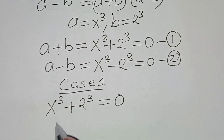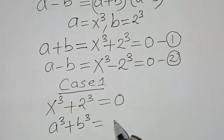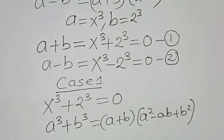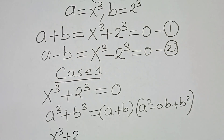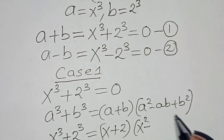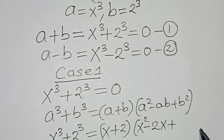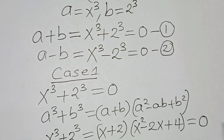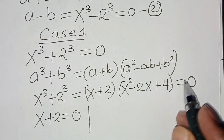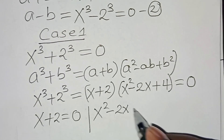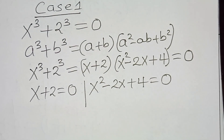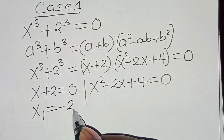This is in the form of a cubed plus b cubed, which we can express as (a plus b)(a squared minus ab plus b squared). So x to the power 3 plus 2 to the power 3 can be expressed as (x plus 2)(x squared minus 2x plus 4) equals 0. We have two parts: x plus 2 equals 0, and x squared minus 2x plus 4 equals 0. Therefore x1 equals minus 2.